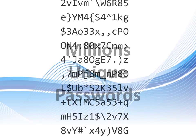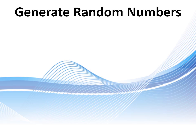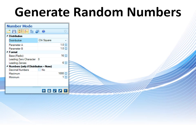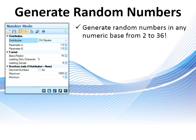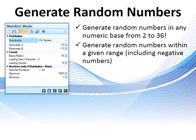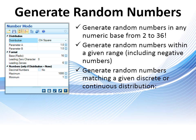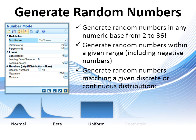You can also generate random numbers in number generation mode. You can generate random numbers in any numeric base, from binary to hexadecimal to even base 36. Generate random numbers within a given range, including negative numbers. Generate random numbers matching a given discrete or continuous distribution, like normal, beta, uniform, geometric, and many others.